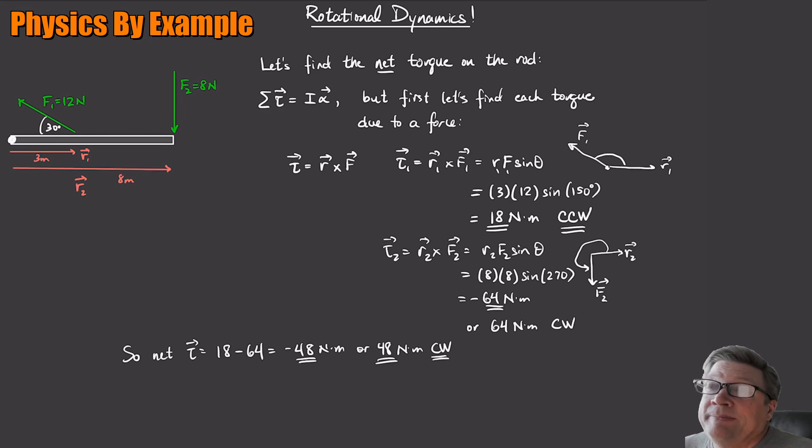And then if we want, we can figure out the rate at which this thing is going to start spinning. Because now this, like we had up at the top, this sum of the torques is going to be I alpha. So this thing is going to start accelerating at a rate of what? That's going to be minus 48 divided by I. What's the moment of inertia of this thing? It's a rod, one third ML squared.